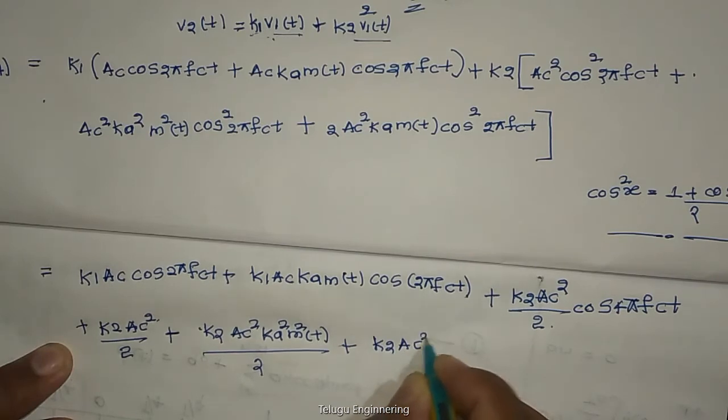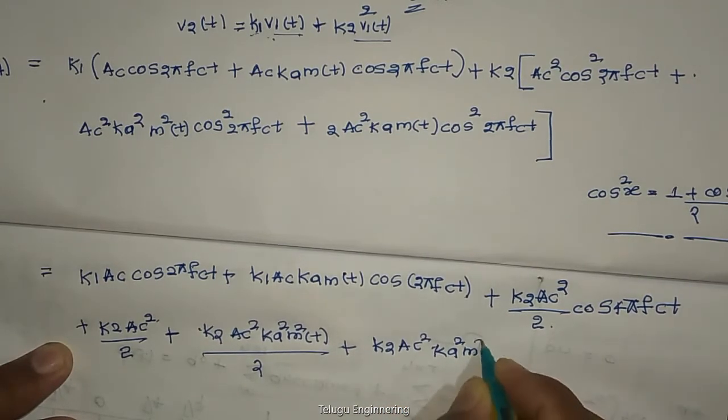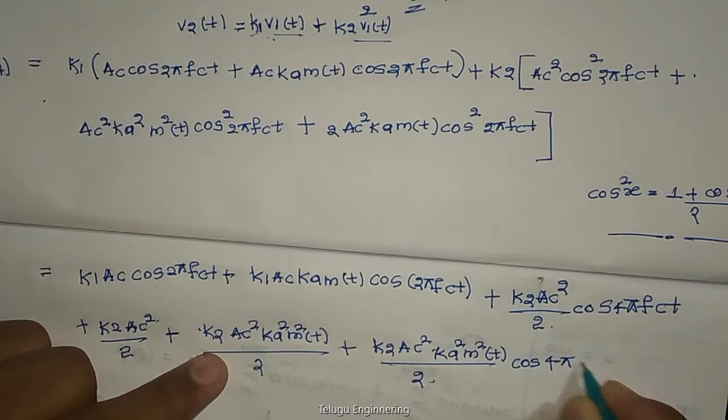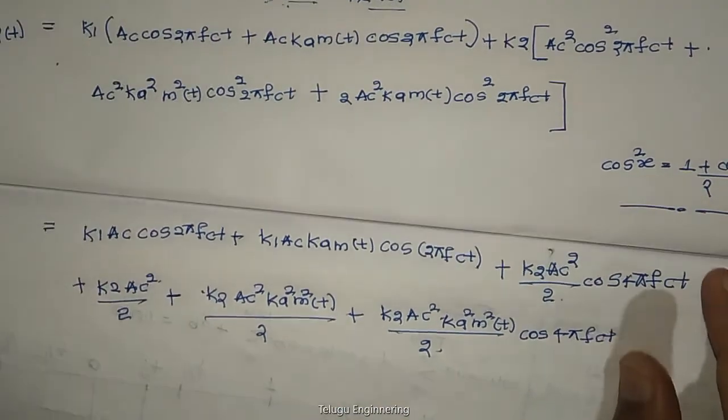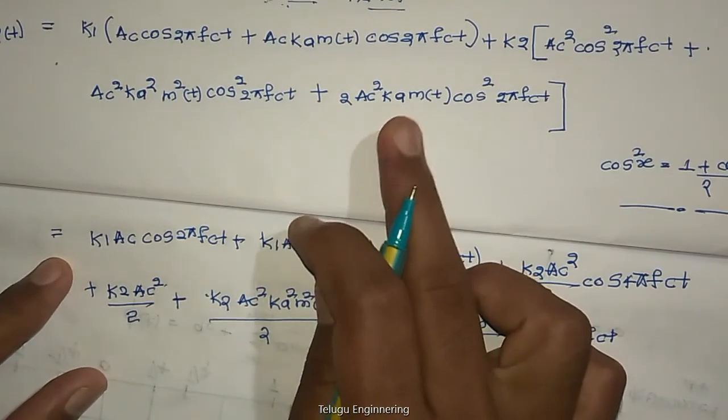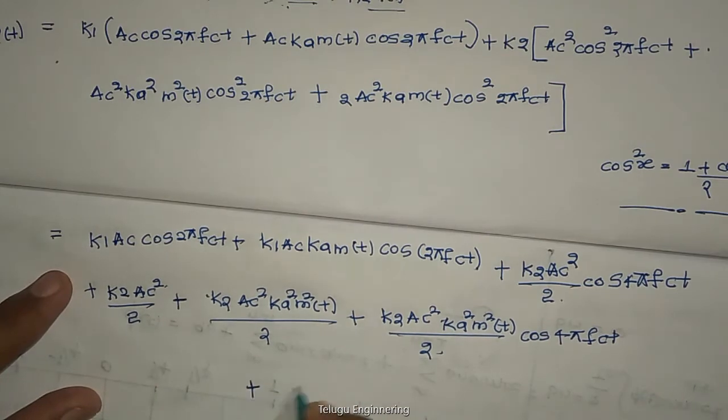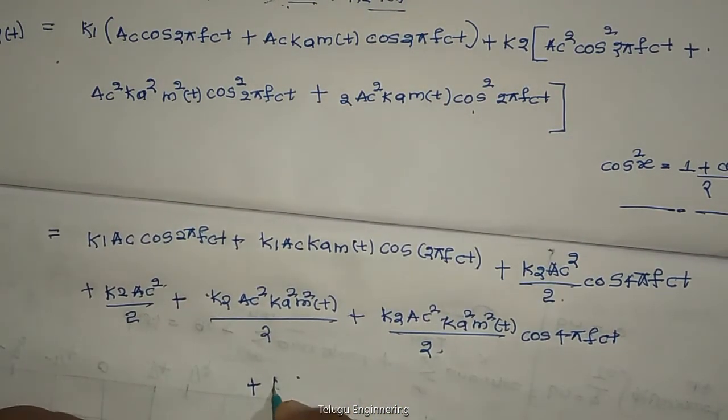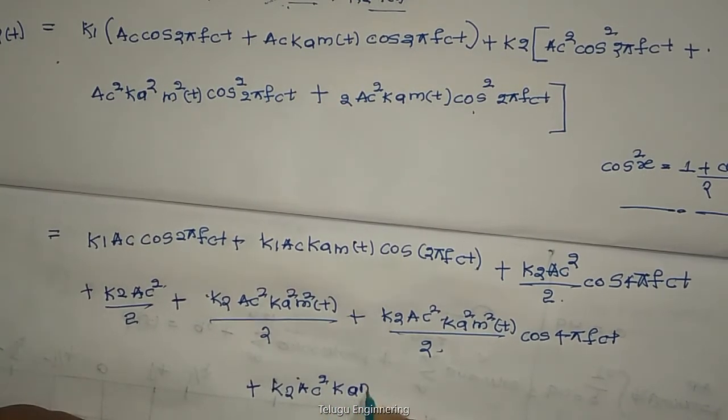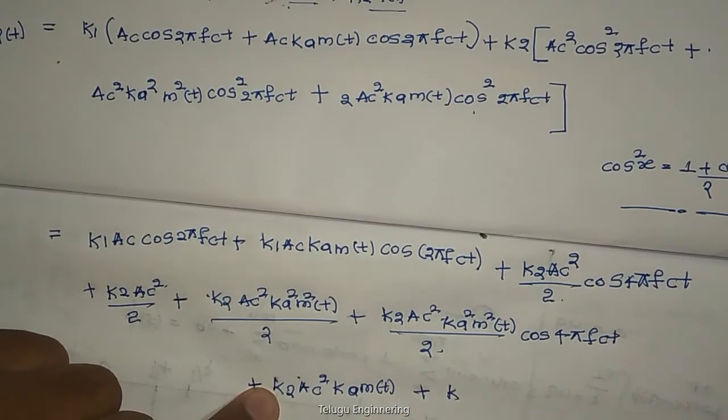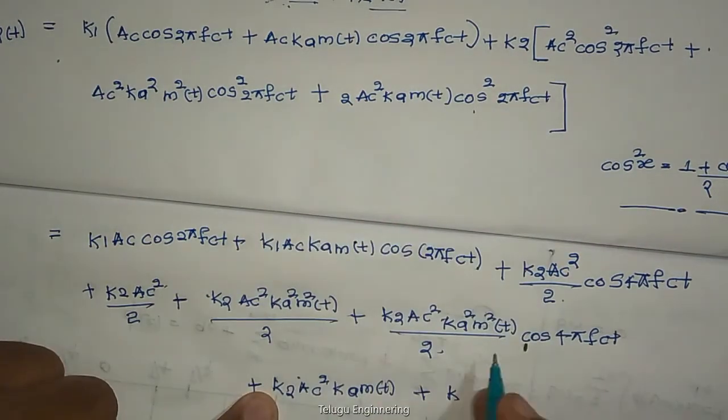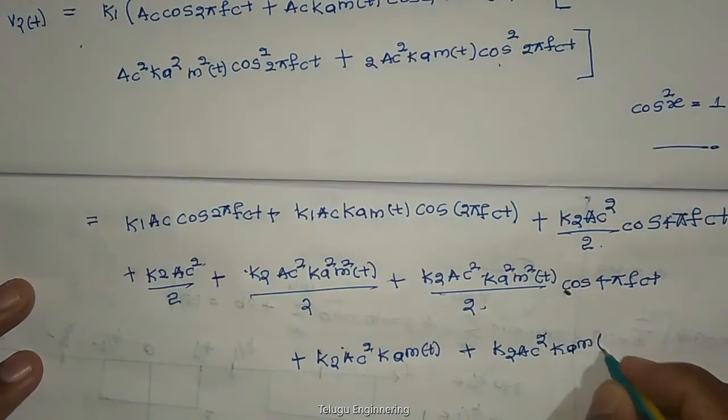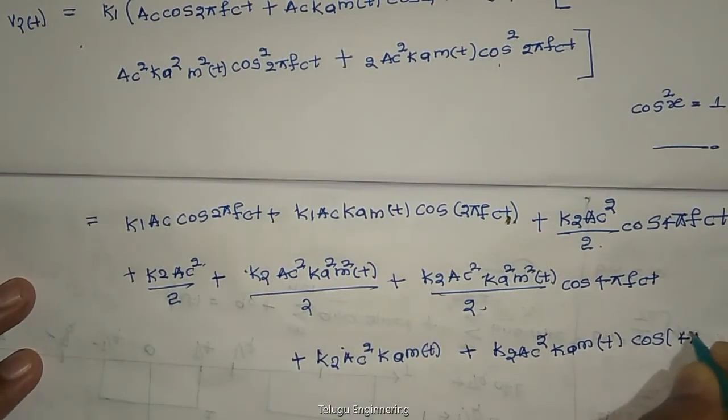And next term is K2 AC square KA square M square T by 2 plus K2 AC square KA square M square of T by 2 cosine 4 pi FC T. The equation is full and long but these are very simple calculations. Plus K2 AC square KA M of T plus 1 plus cosine 2X by 2, plus K2 AC square KA M of T cosine 4 pi FC T.